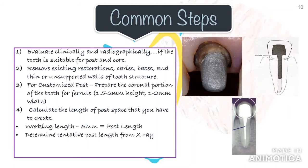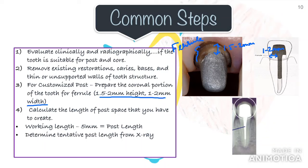The second step is to remove any existing restoration, caries, thin or unsupported walls of the tooth structure — but remember, you have to preserve as much coronal tooth structure as possible to enable the axial walls of the crown to externally brace the tooth, that is, for a proper ferrule effect. At least 1.5 to 2 mm of tooth structure should be present above the gingival margin. If that is not present, you may have to do an orthodontic extrusion or crown lengthening procedure. For a custom post, prepare the coronal portion for a ferrule — a circumferential ferrule of 1.5 to 2 mm height and 1 to 2 mm width. For a fiber post, the ferrule can be created after post cementation.